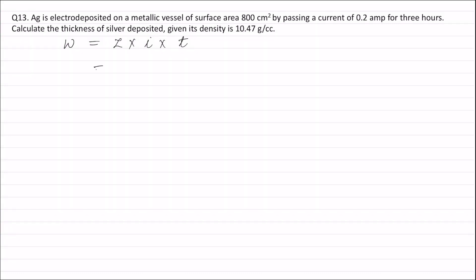The value of Z is equal to the equivalent weight of silver, that is 108 divided by 96500 coulombs, into the value of current given as 0.2 amperes, into the time given as 3 hours, which is also equal to 3 × 3600 seconds.